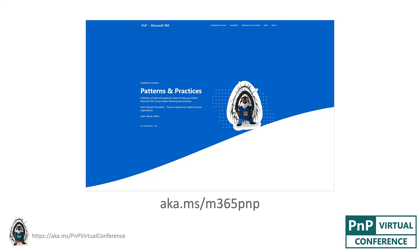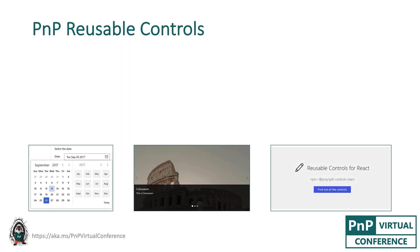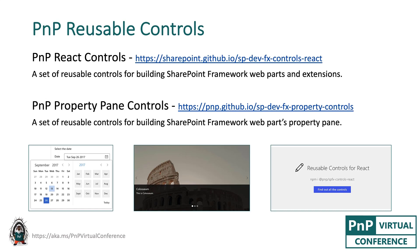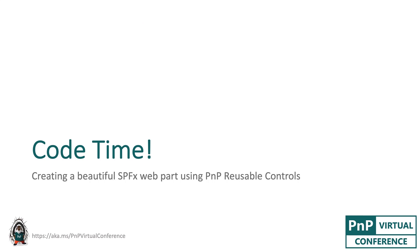This is a landing page for all Microsoft 365 resources. But in this session, we'll focus on PNP reusable controls. There are two repositories or two npm modules for the controls. The first one is PNP React controls — a set of reusable controls for building SPFx web parts and extensions. And the second one is PNP PropertyPane controls — a set of controls to be used in SPFx web parts' PropertyPane.